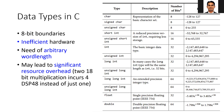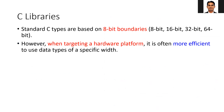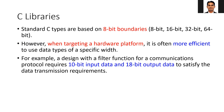Since HLS is based upon C as an input, we need additional support to handle arbitrary word length. Note that code designed using arbitrary word length may not be compatible with the processor — it will work only on hardware. Standard C types are based on 8-bit boundaries. However, when targeting a hardware platform it is often more efficient to use a specific word length data type. For example, in wireless communication using FIR filtering, assuming the input data is 10-bit and the output is 18-bit,